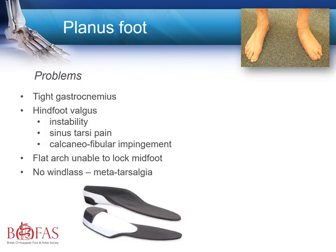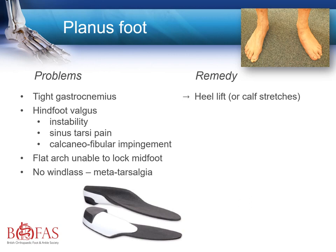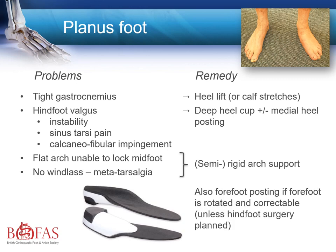Let's work through a few clinical examples. A common example is the planus foot, where the problems are a tight gastrocnemius, hind foot valgus instability, pain in the sinus tarsi, and a flattened arch unable to lock the midfoot, leading to metatarsalgia. All of these can be addressed by an orthotic: the remedy involves a heel lift with stretching, a deep heel cup with perhaps a medial hind foot heel post, arch support if required, and if there is a twisting forefoot pathology, forefoot posting as well.